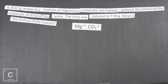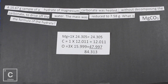Magnesium is a plus two. Carbonate is also a two. That's a one-to-one ratio — MgCO3. We are going to need the molar mass of the anhydrate and of water. For the anhydrate, we have one magnesium, one carbon, and three oxygens, for a total molar mass of 84.313 grams per mole.